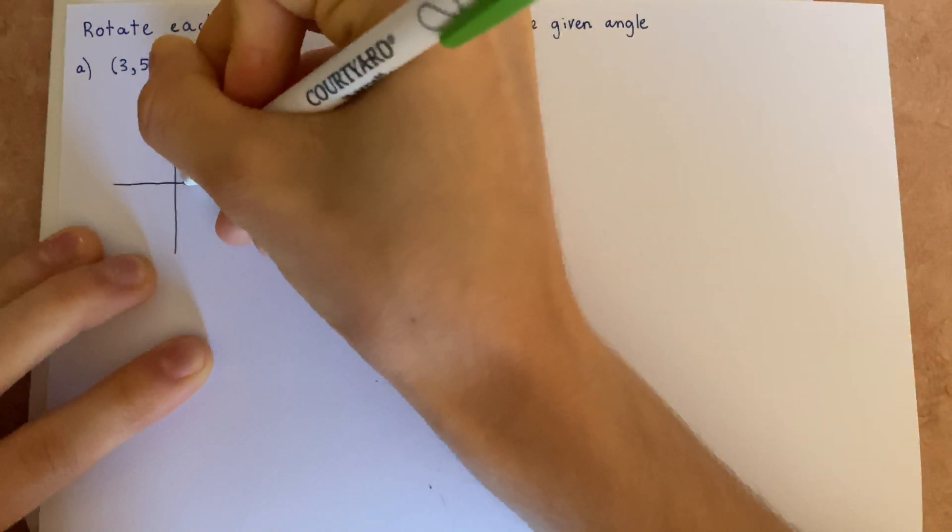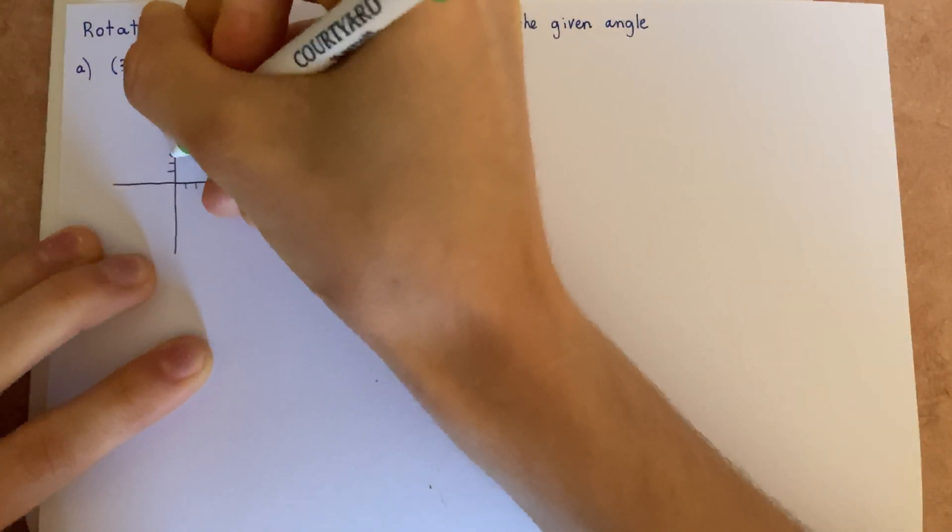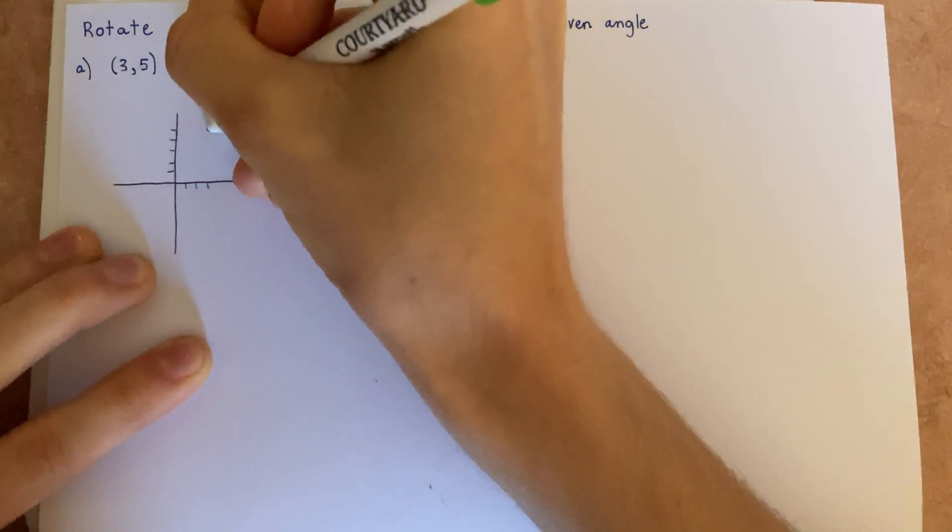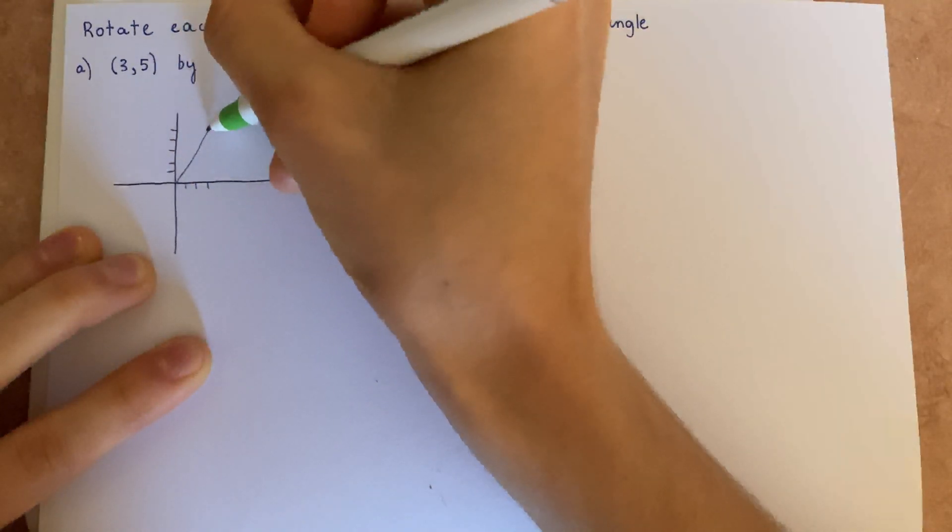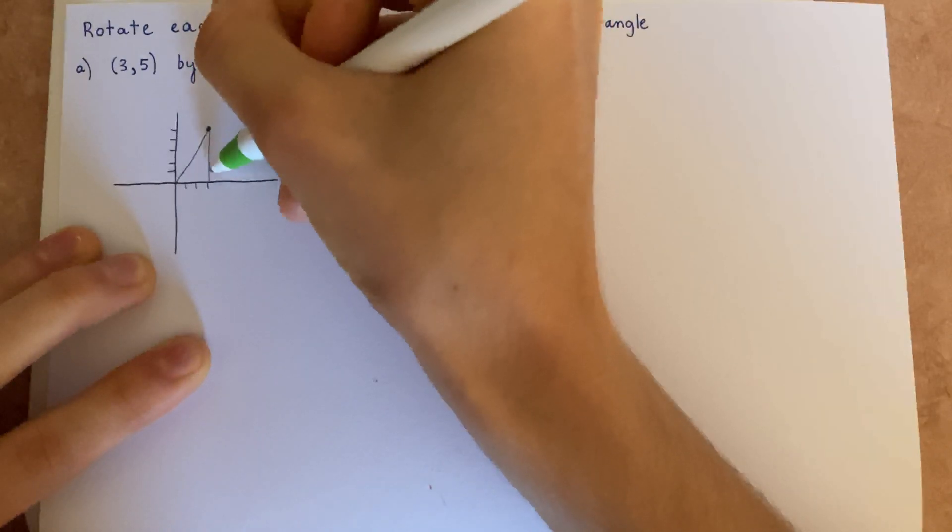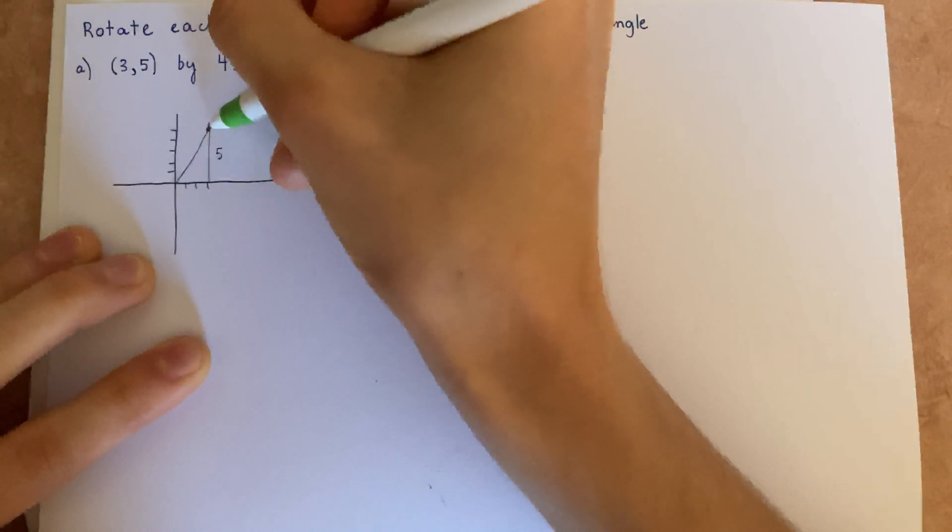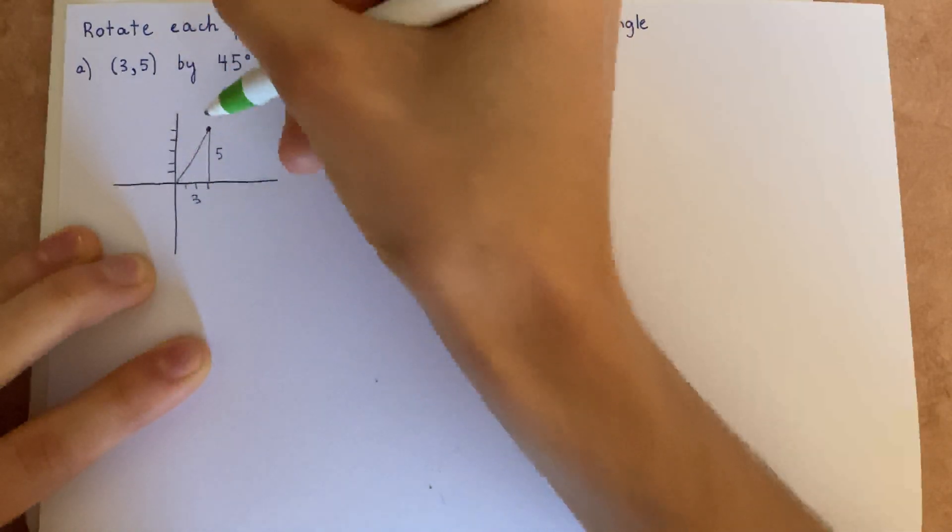So let's first draw that. The coordinates 1, 2, 3... 1, 2, 3, 4, 5. They're around right here. And we can draw a triangle. So this would be 5 units, and this is 3 units to give the point (3, 5).